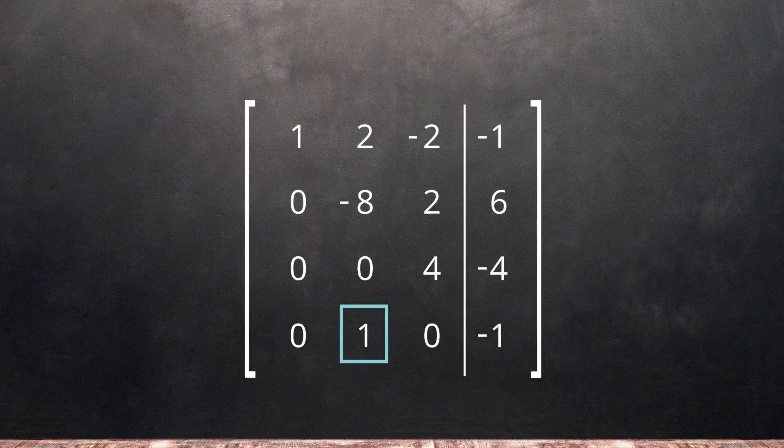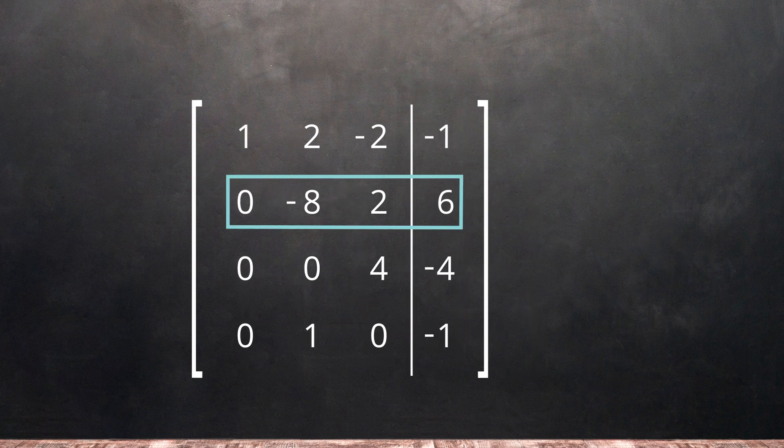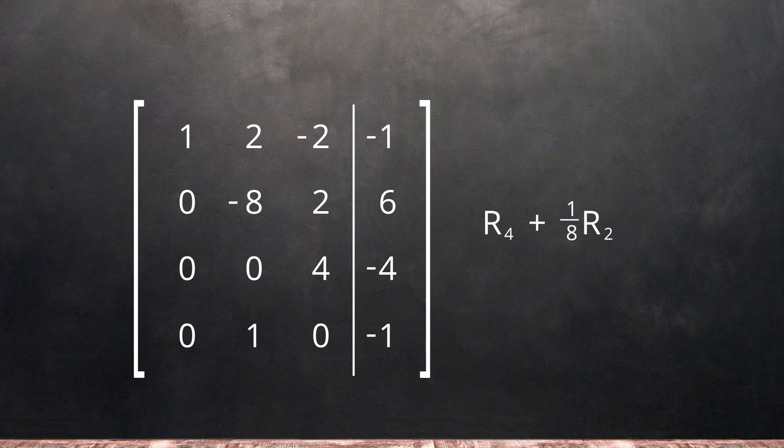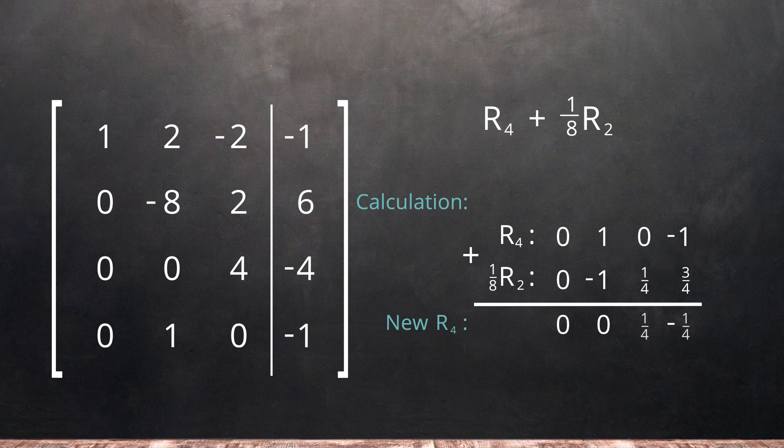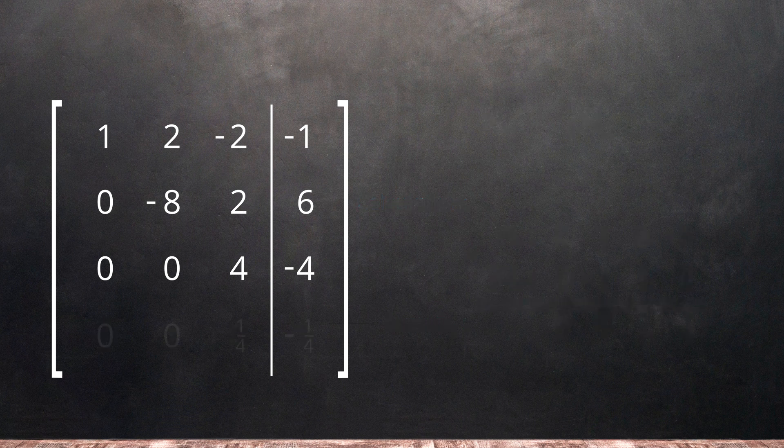Now we will change the 1 in the fourth row to a 0 using the second row as our pivot. By adding 1 eighth times row 2 to row 4, performing the calculation, we get our new row 4 and can rewrite our matrix.